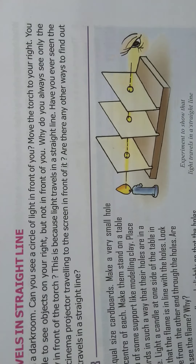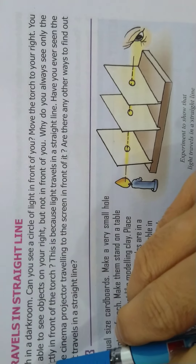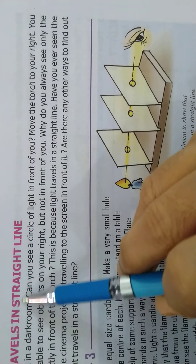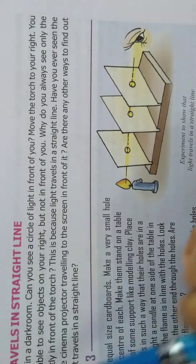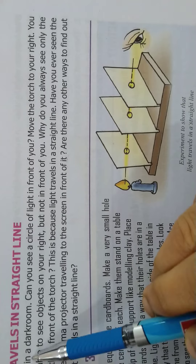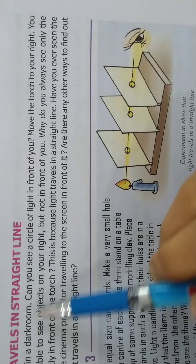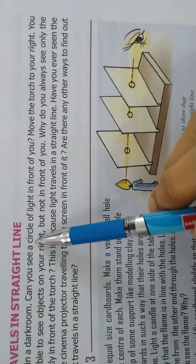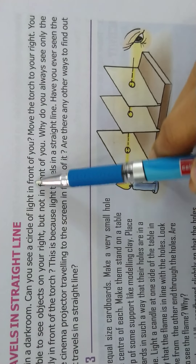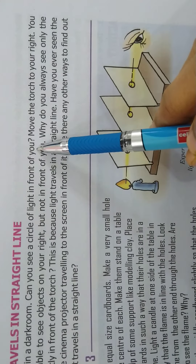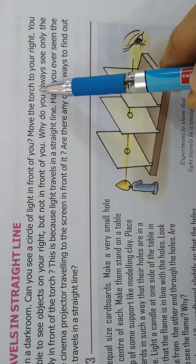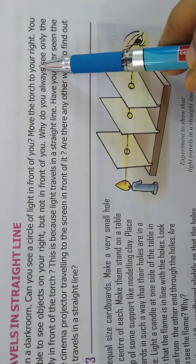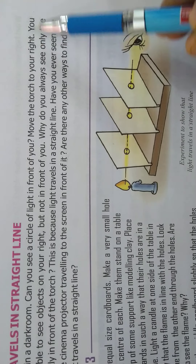Hello children, today's topic is light travels in a straight line. Shine a torch in a dark room. Can you see a circle of light in front of you? Move the torch to your right.